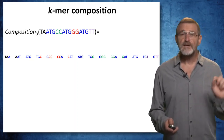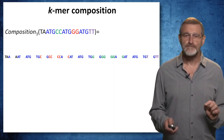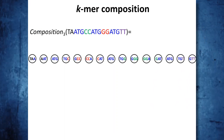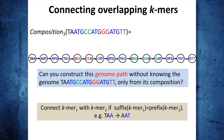Let's try to assemble these 3-mers into the string. We will represent every 3-mer as a vertex in the graph. This is a path in the graph that corresponds to the string. Can you construct this genome path — a path that spells the genome — without knowing the genome, only from its composition? If we simply connect two k-mers when the suffix of the first k-mer is equal to the prefix of the second k-mer, we will get this path. For example, we connect TAA with AAT because TAA ends in AA and AAT starts in AA.